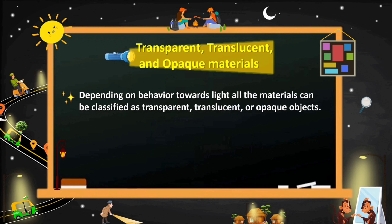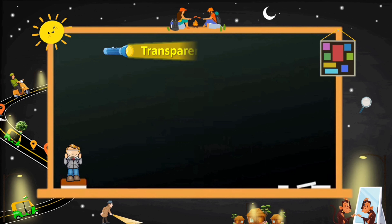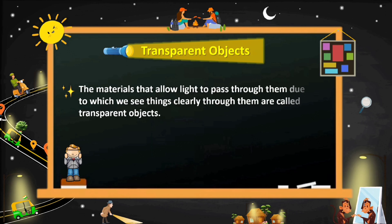Depending on their behavior towards light, all materials can be classified as transparent, translucent, or opaque. The materials that allow light to pass through them, due to which we can see things clearly through them, are called transparent objects.